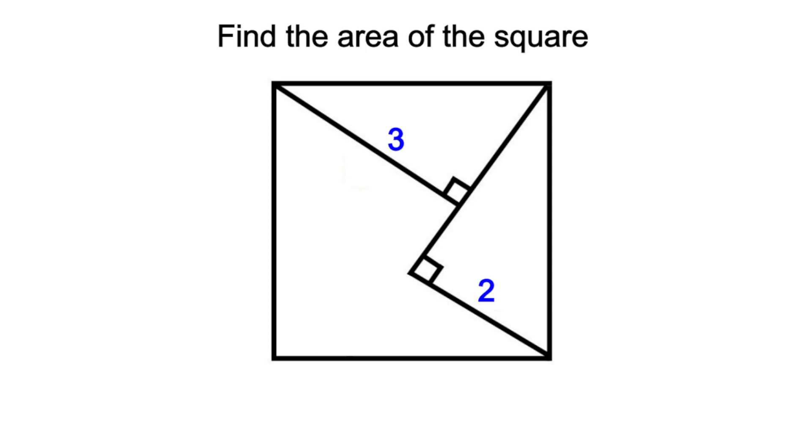So we have a square, and as we can see, we have two right angle triangles inscribed in our square, of which their hypotenuses are also the side length of the square.